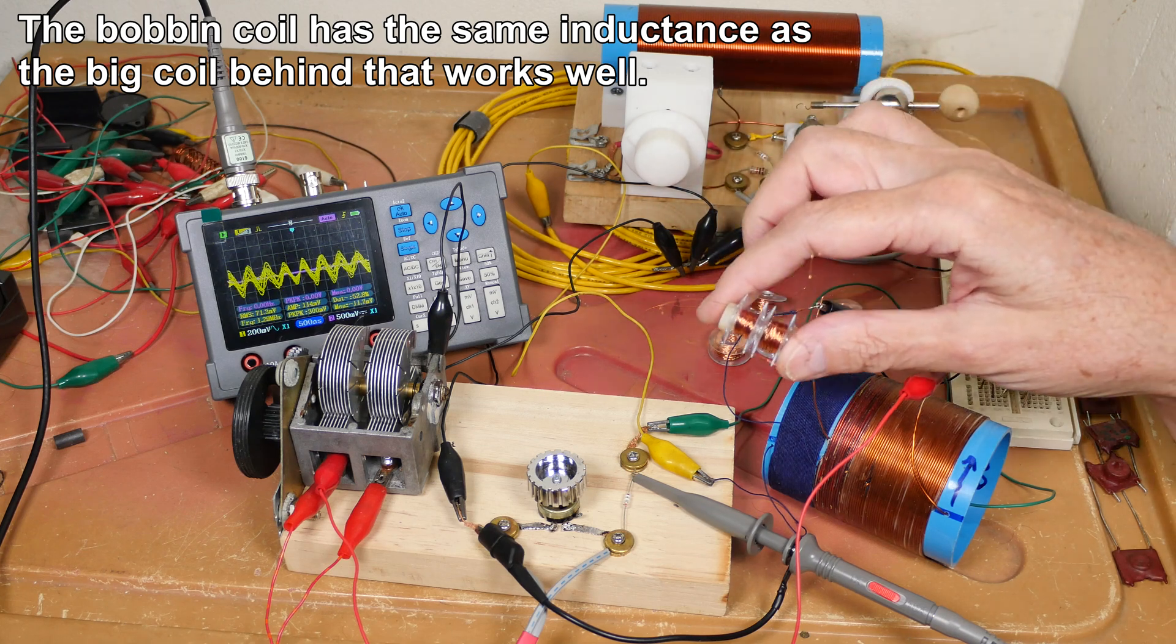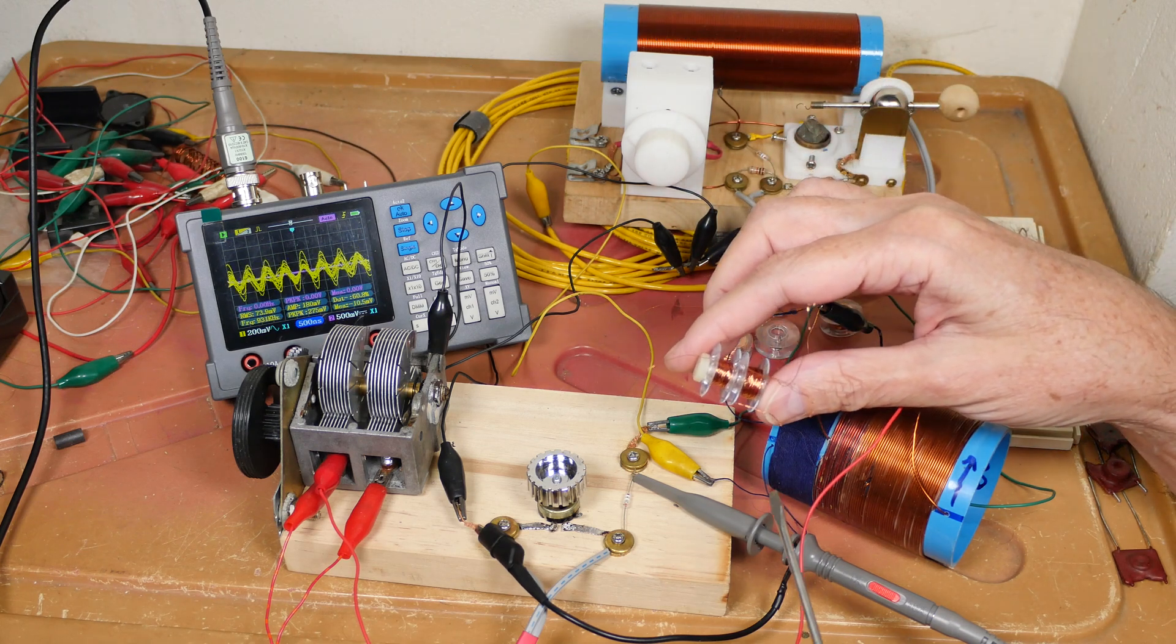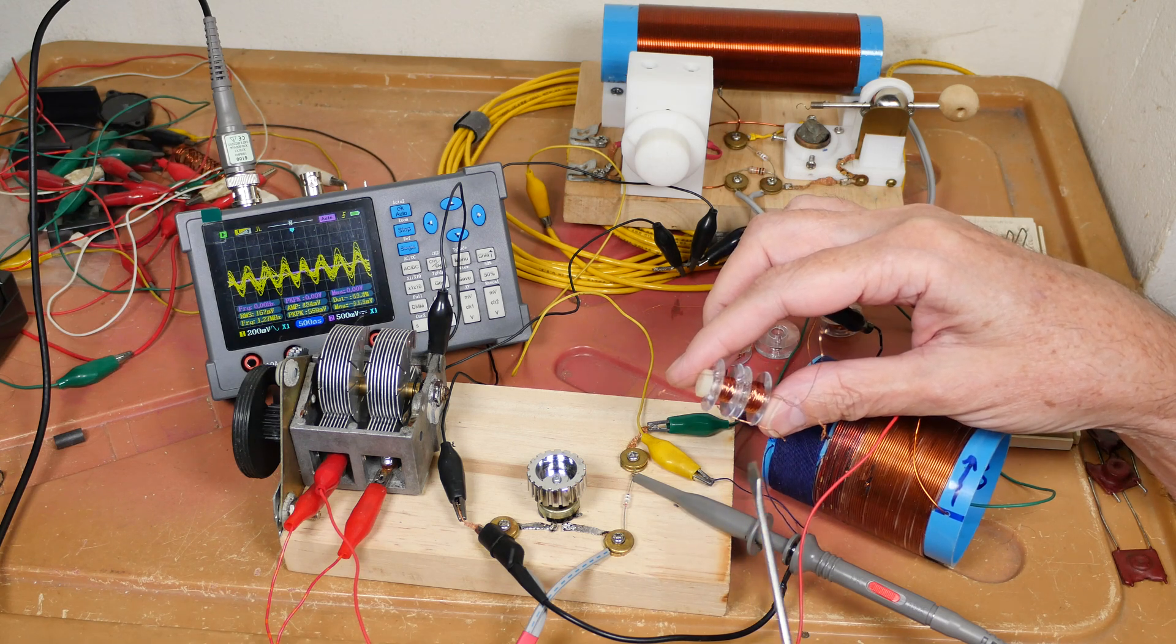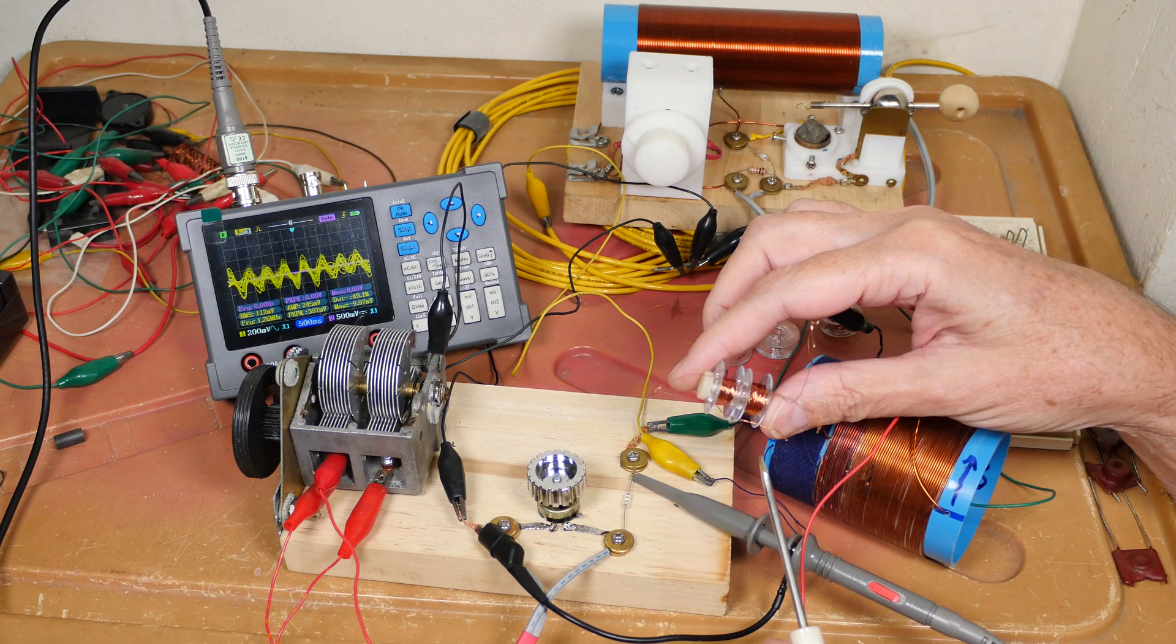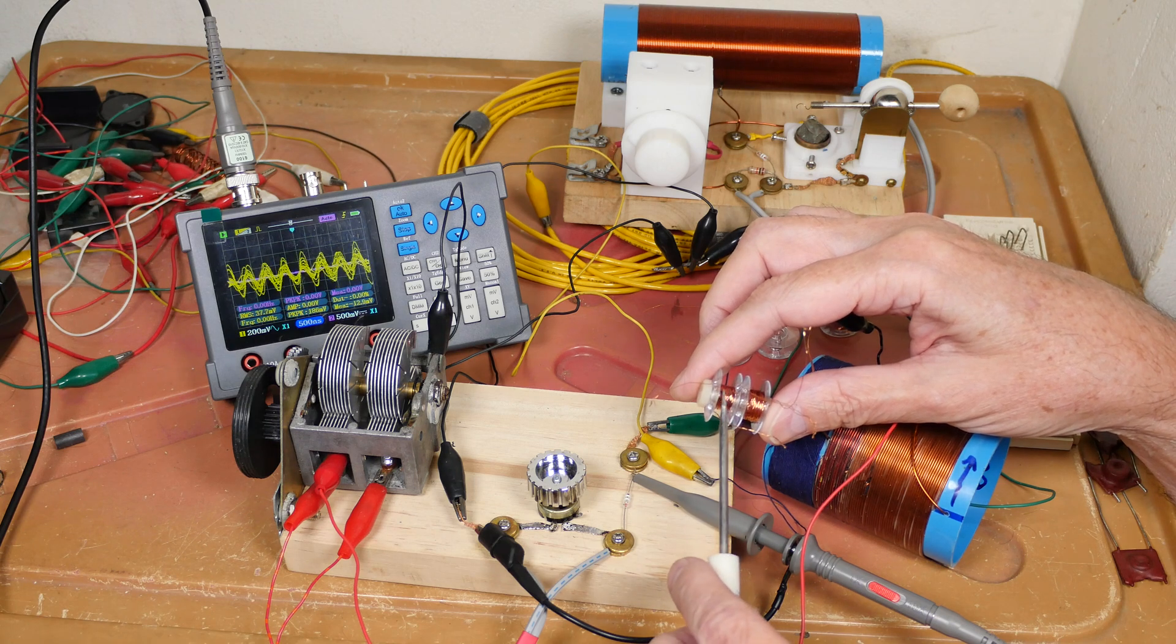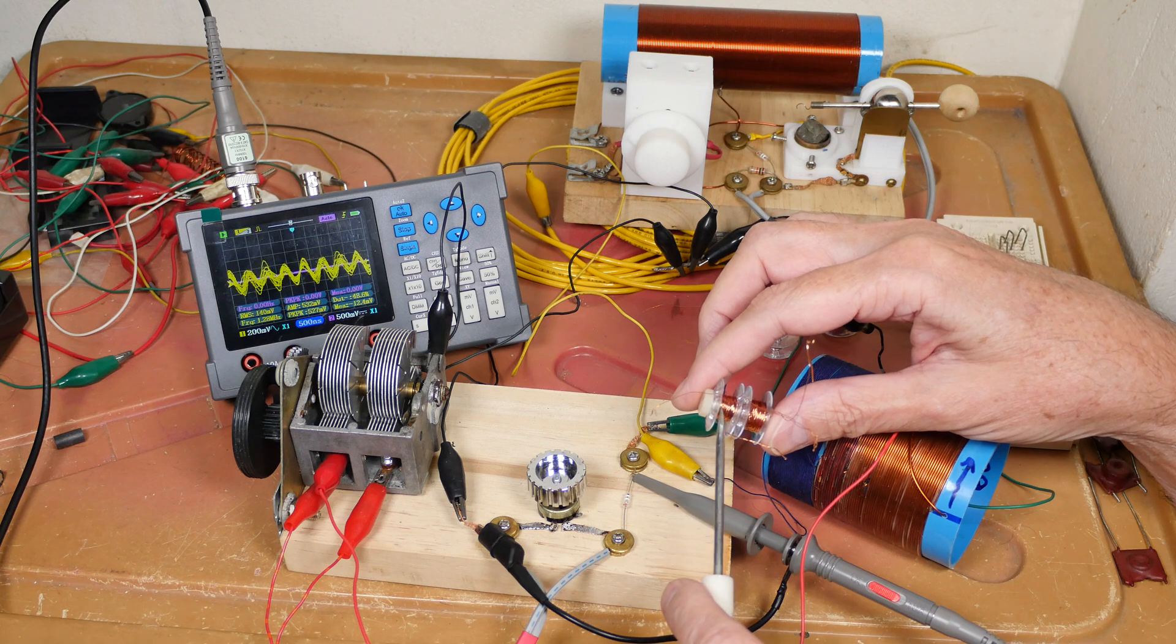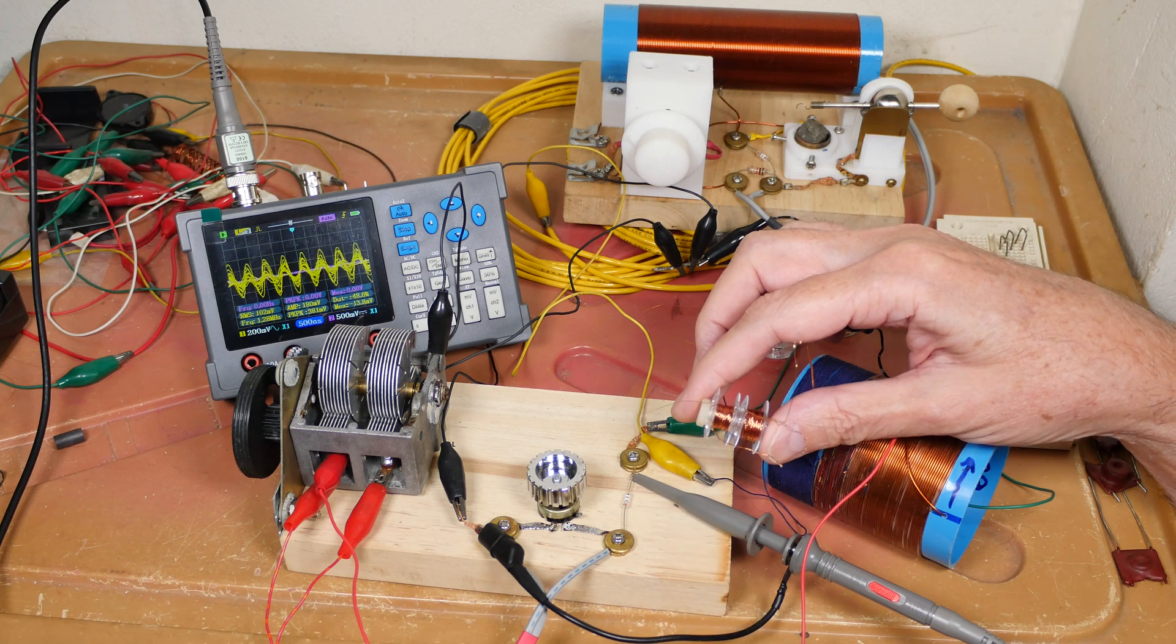Now, what I also should be doing is talking about what went wrong with this. In seventh grade science, I should have known to only change one parameter at a time. When I built this, I changed four parameters. I changed the diameter of the core. I changed the length of the core. I changed the winding style. And I changed the diameter of the wire itself.